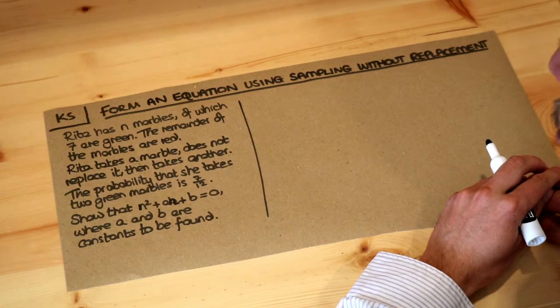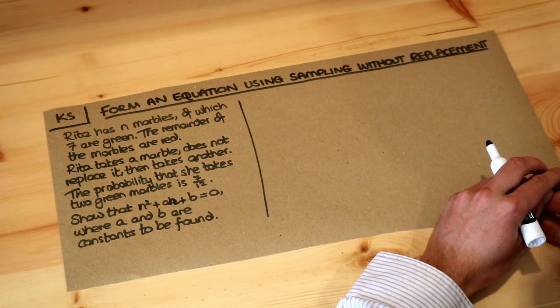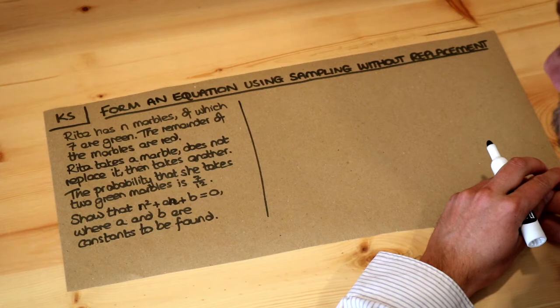The probability that she takes 2 green marbles is 7 twelfths. Show that n squared plus an plus b equals 0, where a and b are constants to be found.